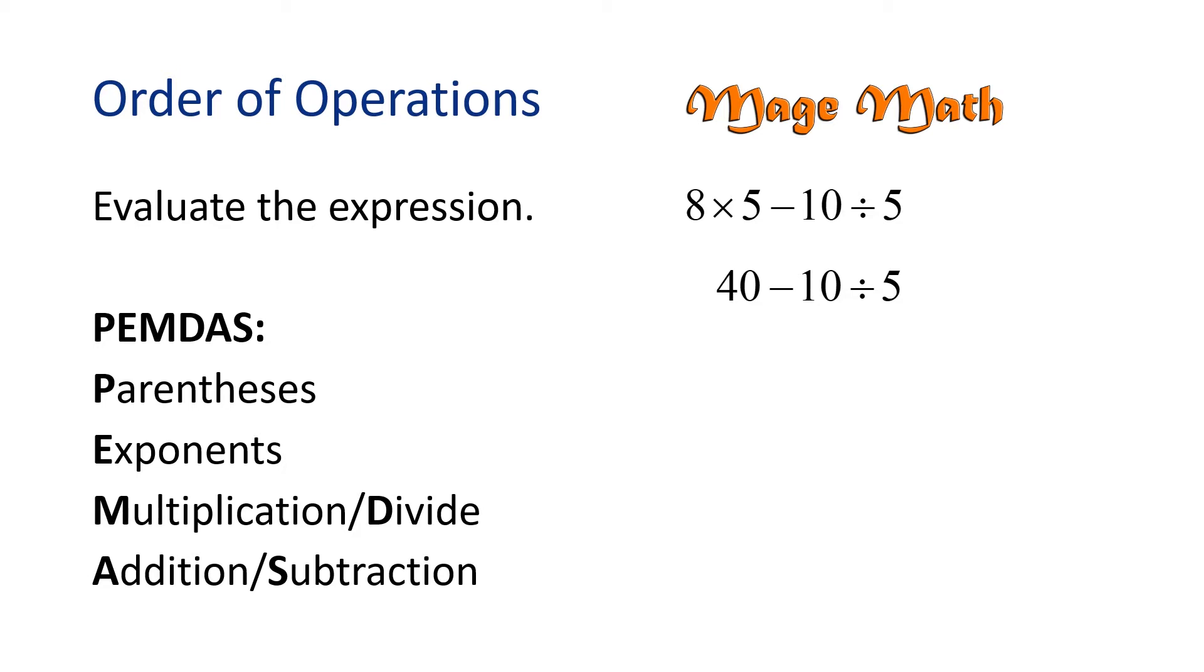Next, we need to divide. So, 10 divided by 5 is 2. And we leave the 40 and minus sign. So, now we subtract. 40 minus 2 is 38. Nice work.